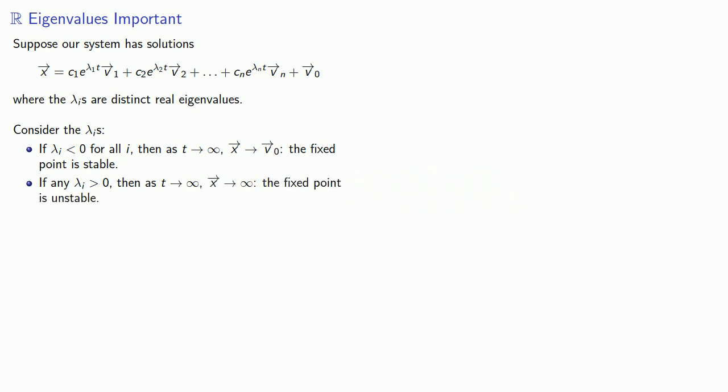In fact, we can go one step further. Let lambda m be the largest eigenvalue. If lambda m is greater than zero, then the exponential component corresponding to that largest eigenvalue will go to infinity the fastest, and so x will go to infinity in the direction of the corresponding eigenvector.